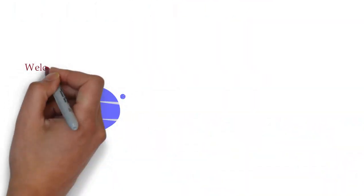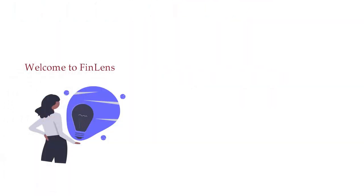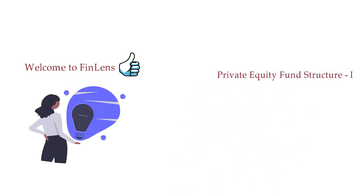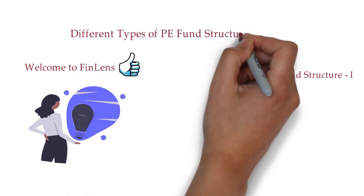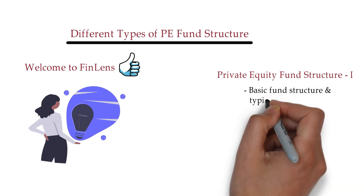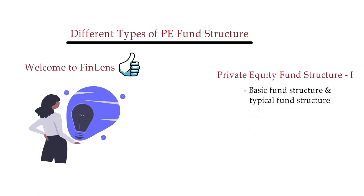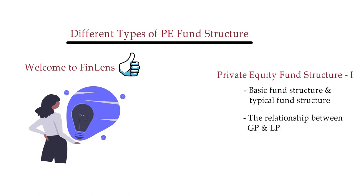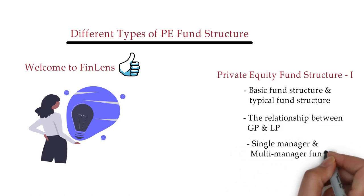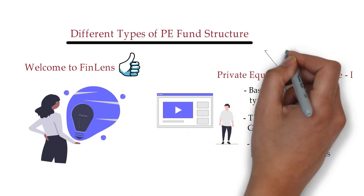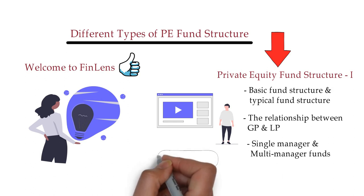Hi friends, welcome to Fin Lens. We hope you are doing great. This video is the continuation of the Part 1 video on private equity structure, and here we will understand some different types of PE structure. Our previous video covered the basic fund structure, typical fund structure, the relationship between GP and LP, and single manager and multi-manager funds. If you have not watched it yet, please watch the Part 1 video before starting — the link is in the description below.